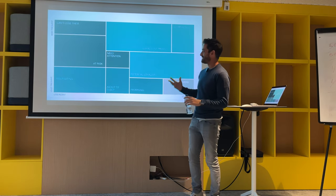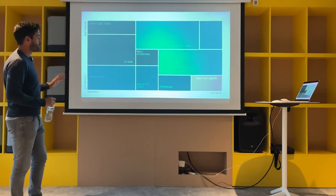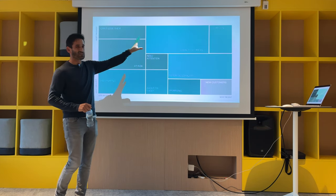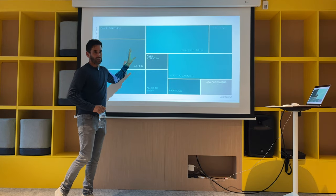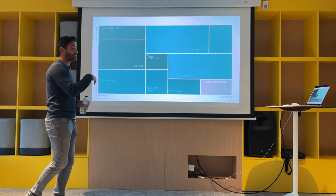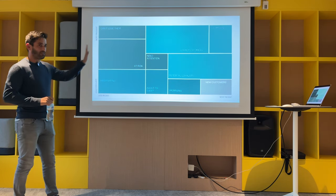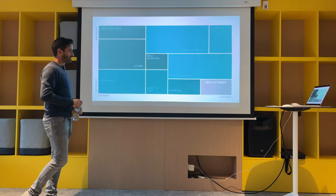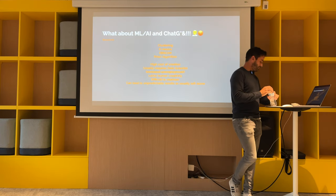This is a tree map visualization showing what your database looks like when segmented. New customers, promising, hibernators, champions — champions are always the smaller base, that's the 80/20. Then you move into 'needs attention' because those customers haven't purchased for some time and may have been high-value historically. That visualization shows exactly where the marketing team should invest their time and money.